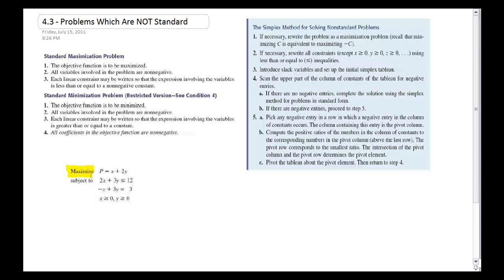Notice this is a maximization problem. So let's see how it compares. The objective function's to be maximized? Check. Variables involved in the problem are non-negative? Check. Each linear constraint is written so that the expression involved is less than or equal to a non-negative constant. Well, less than or equal to a non-negative constant... not so much.